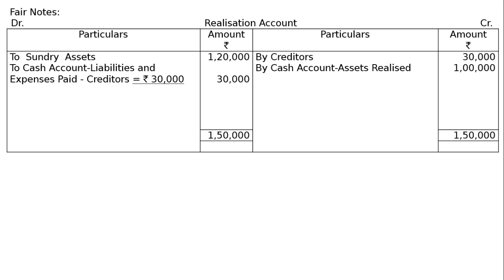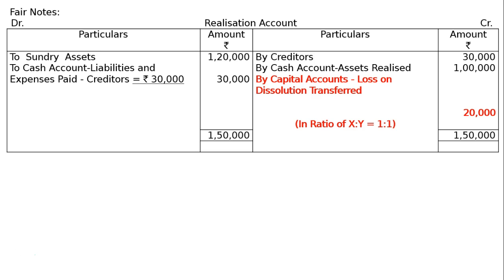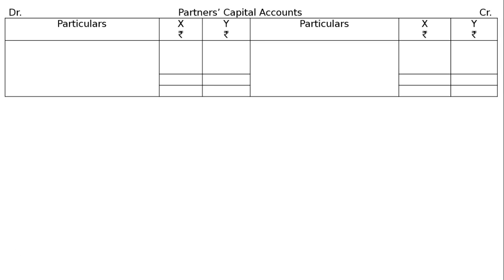Total the debit side: rupees 1,50,000. Put it on the credit side and find out the gap — that is by capital accounts, loss on realization transferred in the ratio of X to Y, 1 is to 1. That is rupees 20,000 total. X's share is rupees 20,000 multiplied by half, equal to rupees 10,000. Y's share is also rupees 10,000.